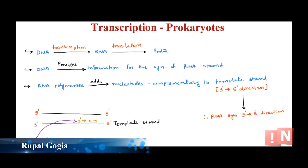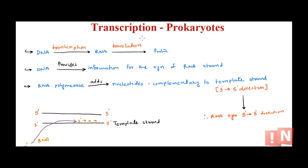Hey guys, welcome back. Today we are talking about one of the most requested videos — the overview of transcription in prokaryotes. What is transcription? The DNA has all the genes that code for specific proteins. DNA produces RNA, which codes for protein, and ultimately this RNA would produce the protein. So DNA is transcribed into RNA, and then RNA gets translated into protein.